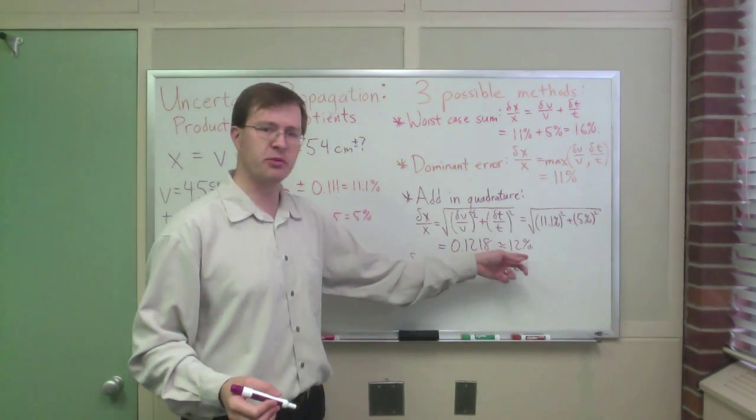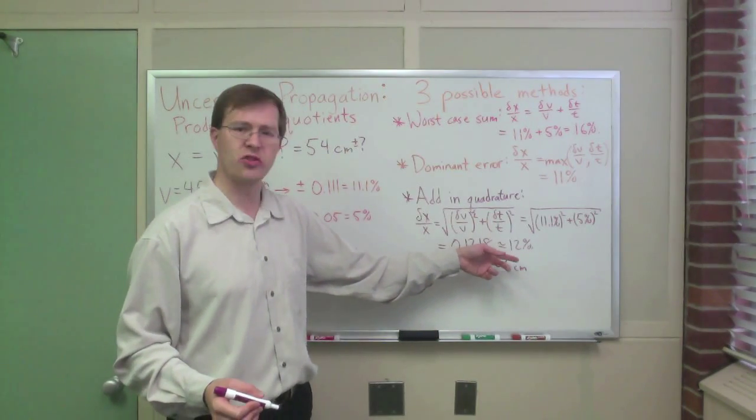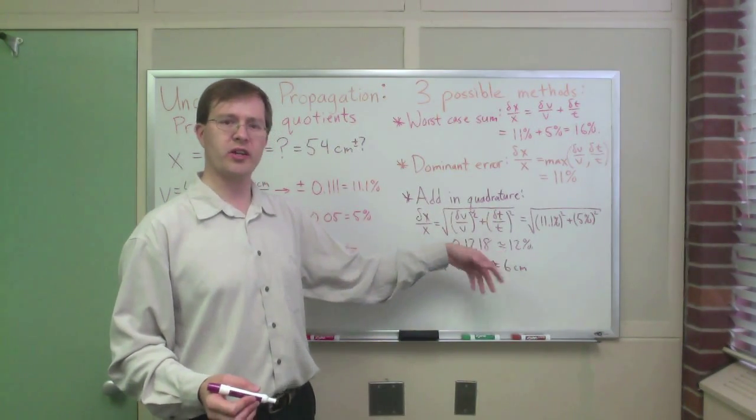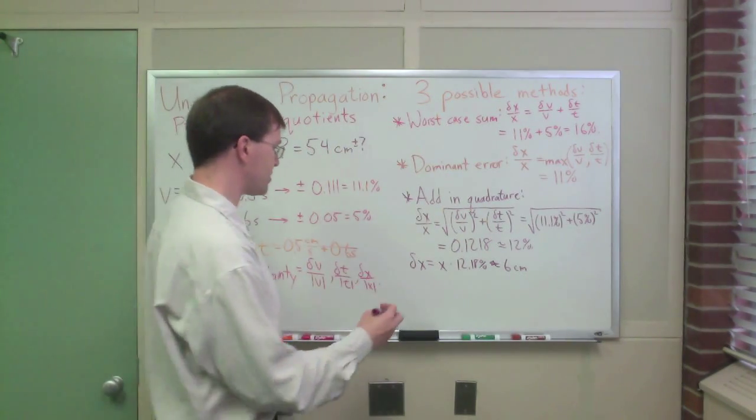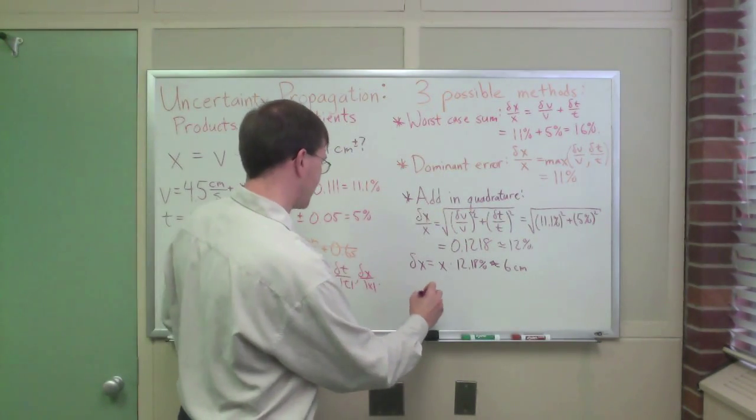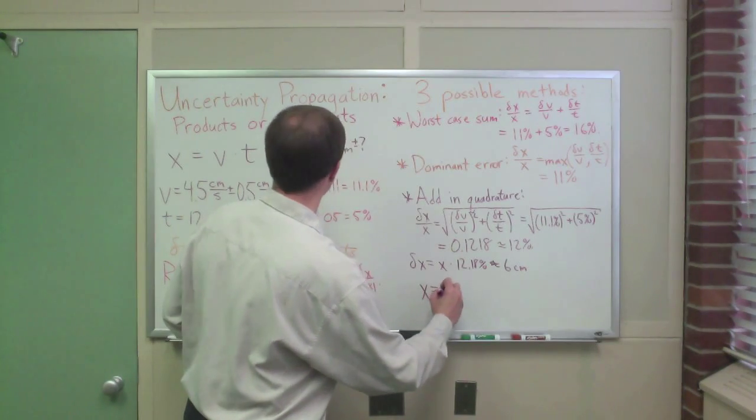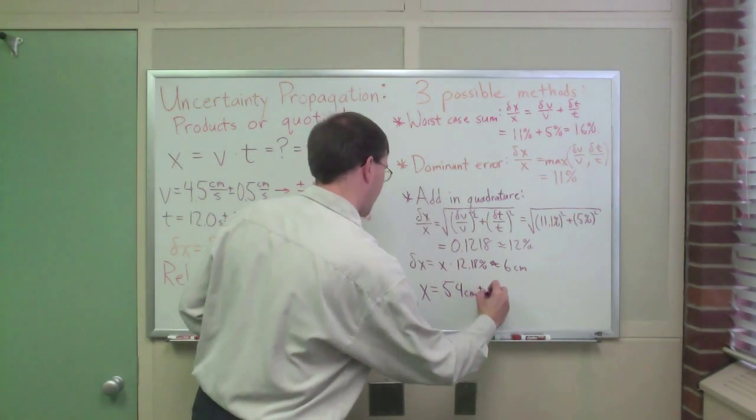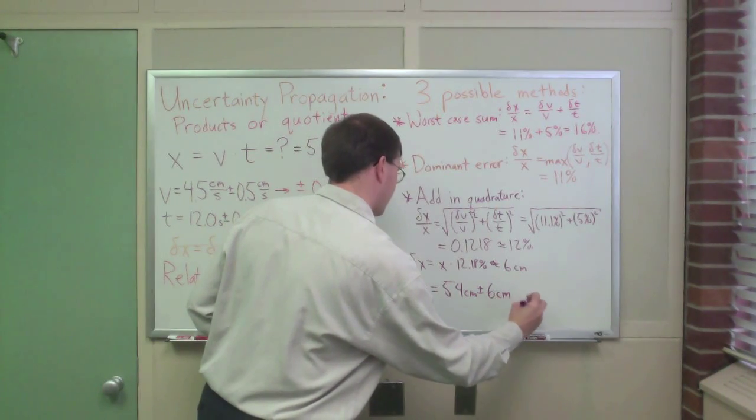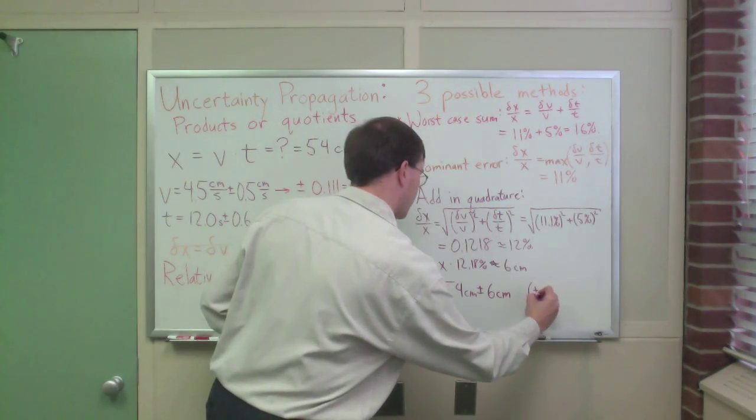I'm keeping two digits in this percent error only because it starts with a 1, and if it starts with a 1 or a 2, I usually keep two digits. But, anyway, 6 cm, so I would report for my final answer that x equals 54 cm plus or minus 6 cm, or I could say plus or minus 12%.